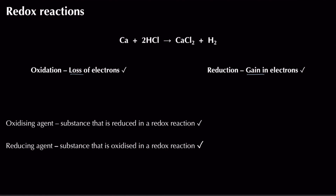Looking at our reaction, we need to assign what's being oxidised and what's being reduced. Starting with calcium: on the left it has an oxidation state of zero because it's uncombined, whereas on the right we have calcium two plus, so the oxidation state is plus two. The number is getting more positive, so we know calcium is going to be oxidised.